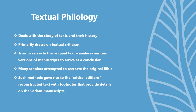Textual philology looks at the study of texts and their history. This branch focuses on textual criticism and tries to recreate the original text based on diverse copies or variants of manuscripts. It is believed to have originated in ancient Greece. For example, many scholars attempted to reconstruct the original version of the Bible from the various available manuscripts. Textual philology later gave rise to critical editions, which provide a reconstructed text accompanied by footnotes indicating the various manuscript variants available.